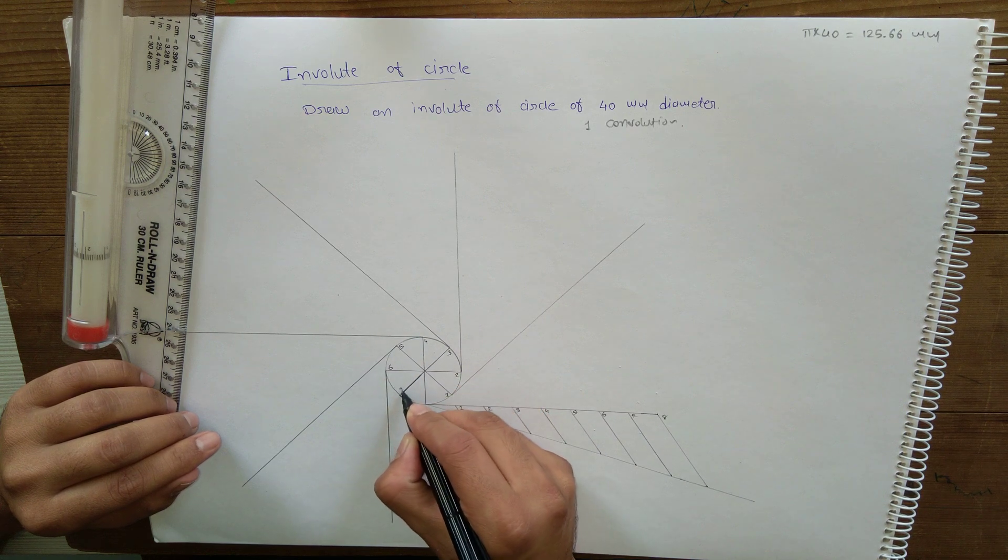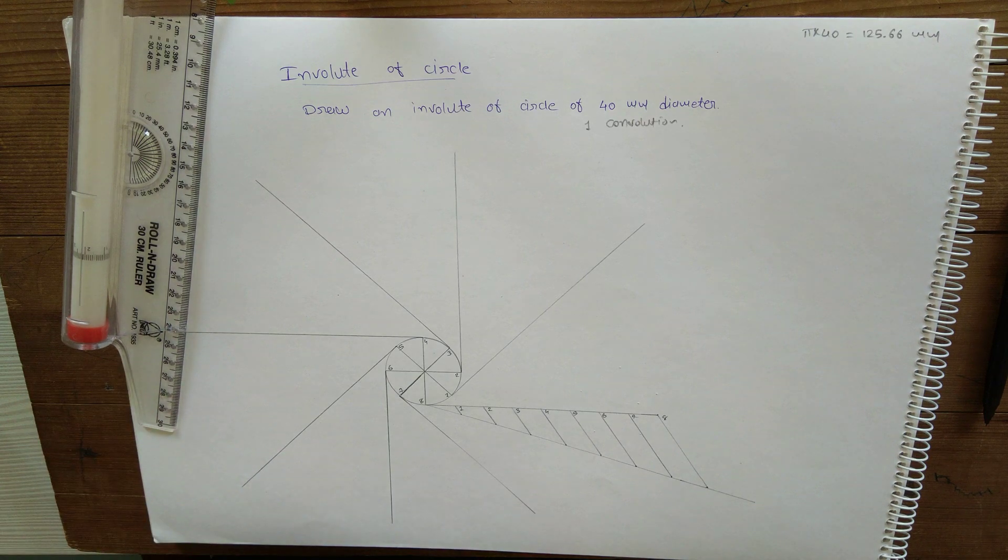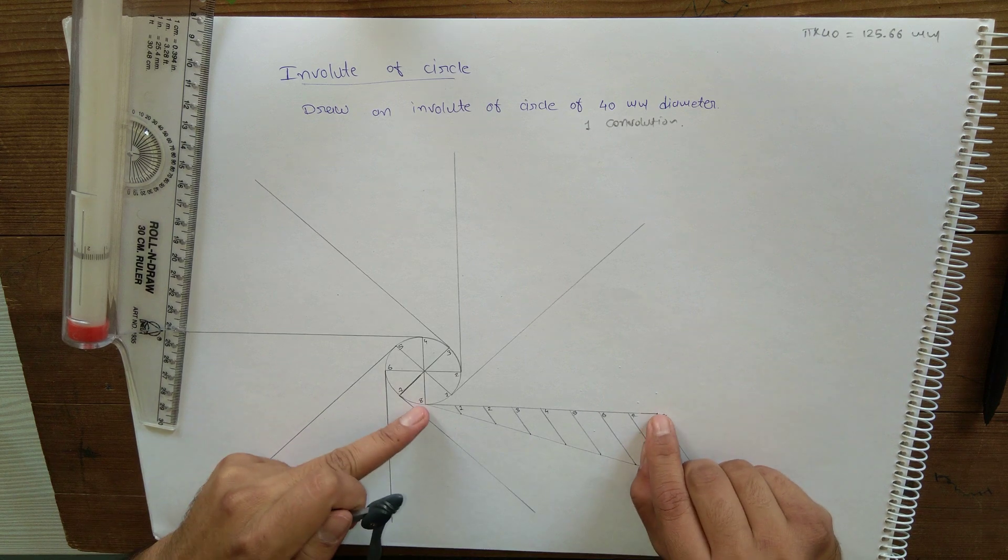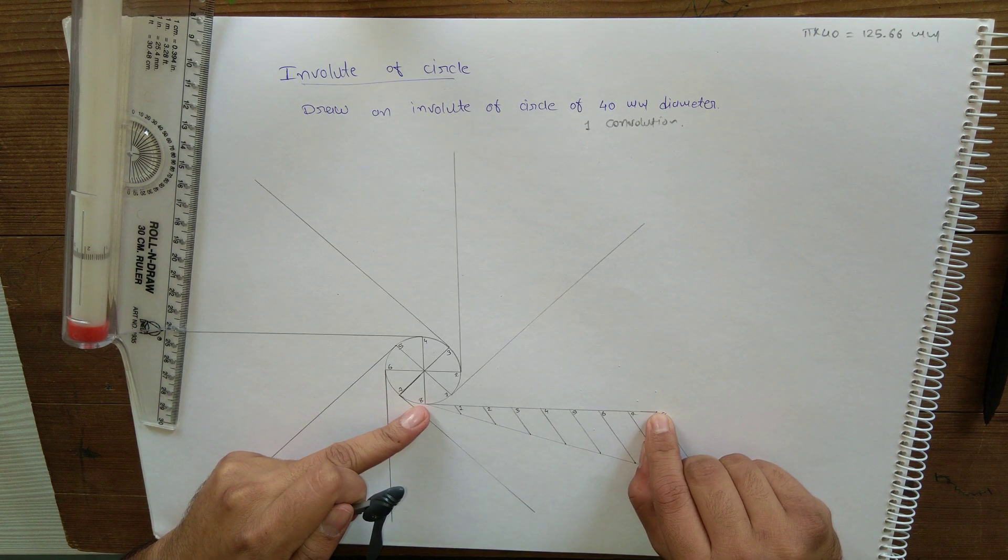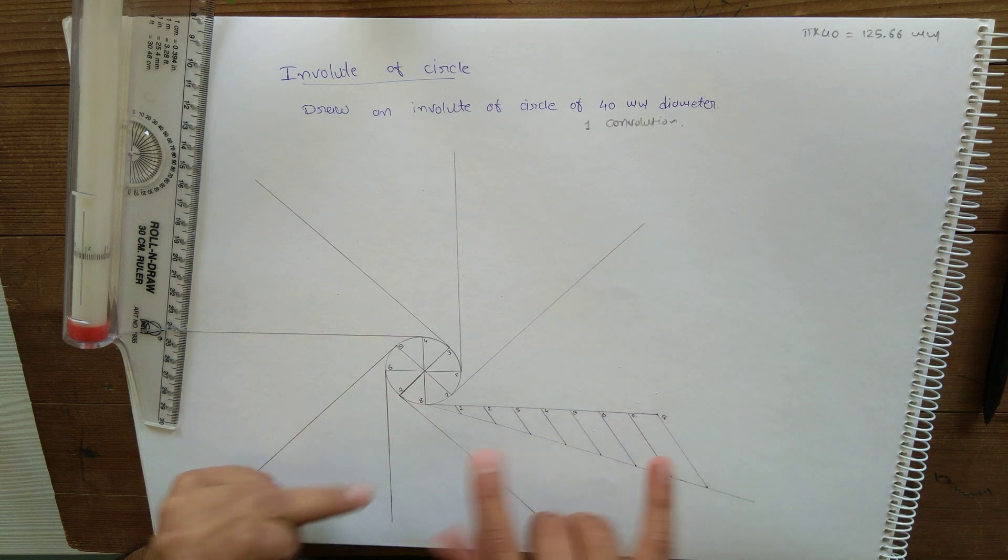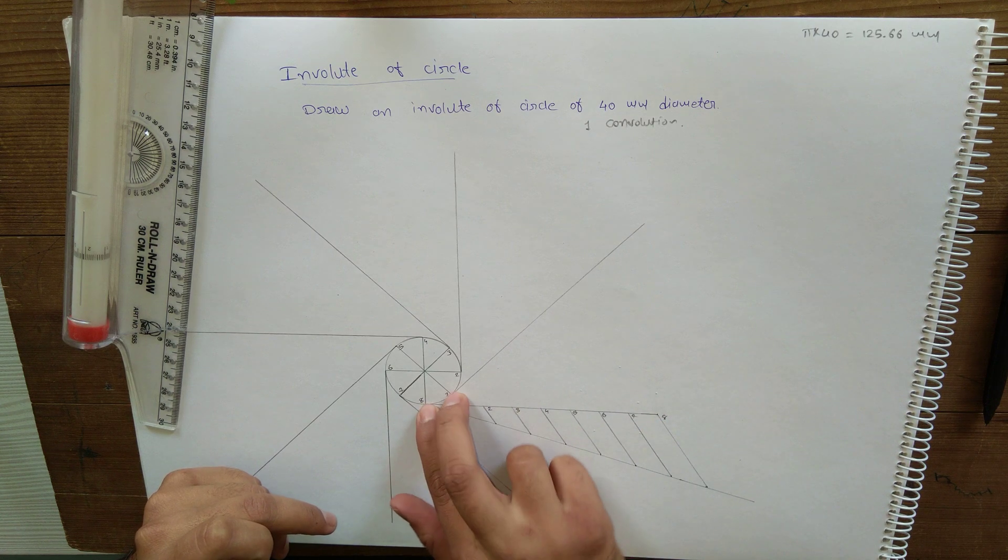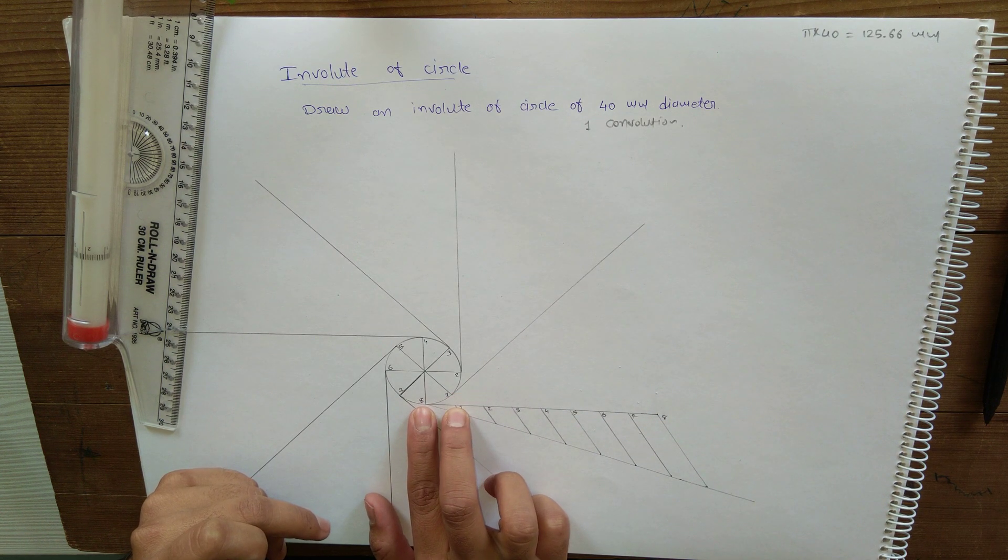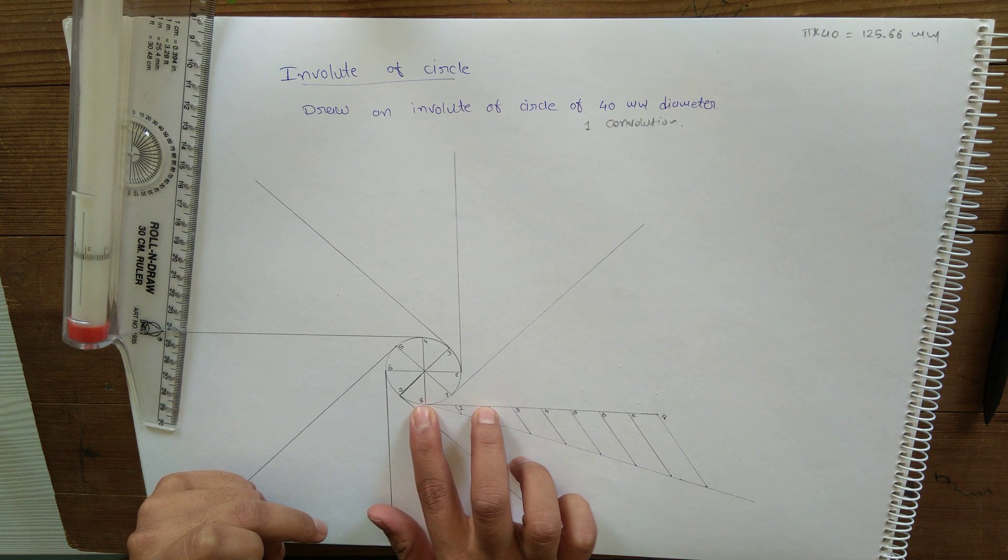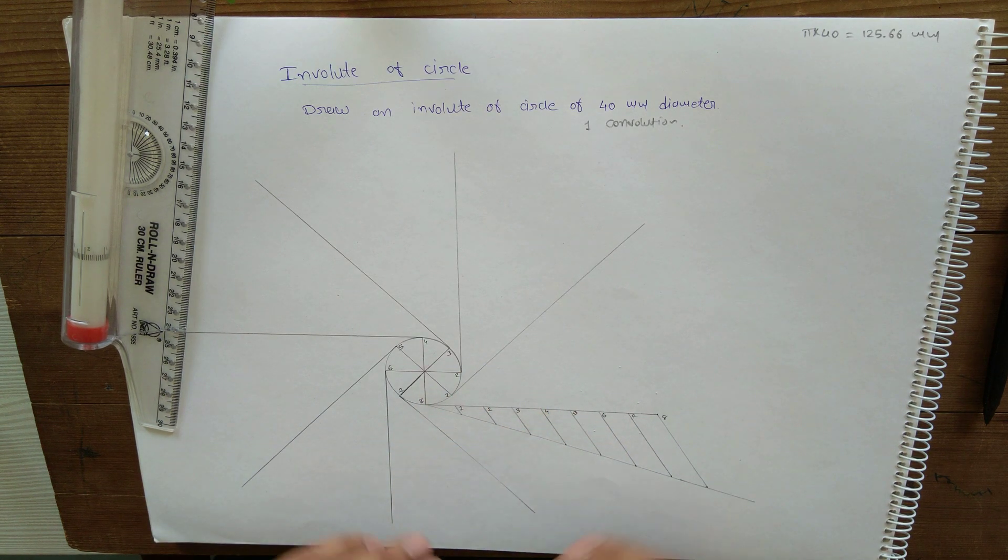Now what will happen when we pull or wind this string from this position to this position? Definitely this one part out of this 8 parts will be wound on this circle, because here whatever may be the line, that is equal to the part of this circle. If you take two parts, this length is also equal to this circumferential length. So one by one we are going to reduce the part length.